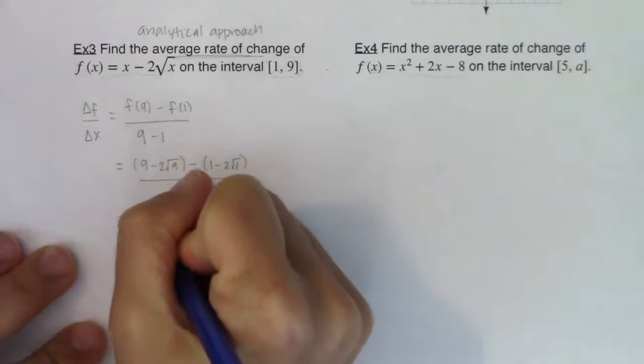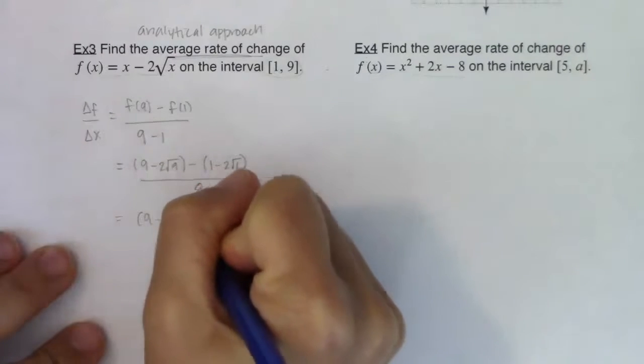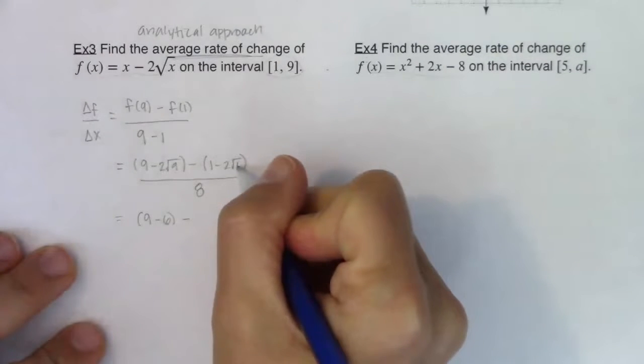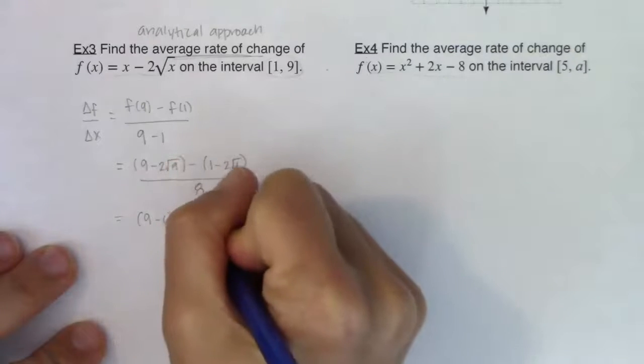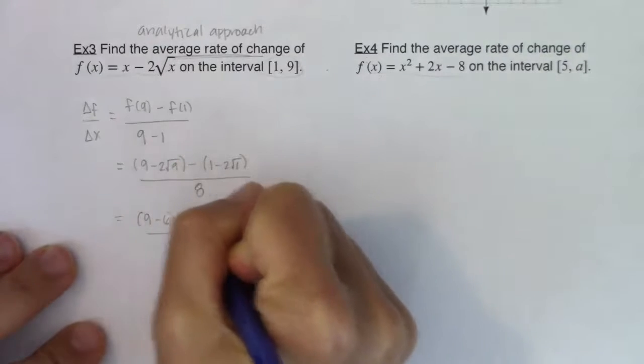Square root of 9 is 3. 2 times 3 is 6, and 9 minus 6 is 3. Now, if I went too fast for that, I'll just write this is going to be 9 minus 6. All right, square root of 1 is 1. 2 times 1 is 2. So we're looking at 1 minus 2 over 8.